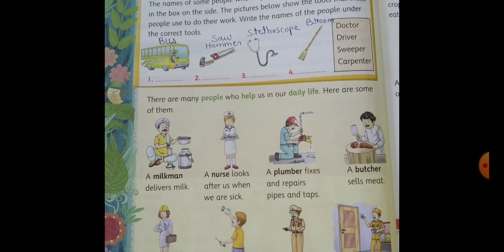A milkman — what does a milkman do? A milkman delivers milk. Nurse — a nurse looks after us when we are sick. When you are sick, you go to hospital. A nurse helps the doctor to take care of the patients. The next one is a plumber. What does a plumber do? A plumber fixes and repairs pipes and taps. If there is any problem — your tank is leaking or you are not getting water in your house — you call a plumber, and he repairs the pipes and taps.